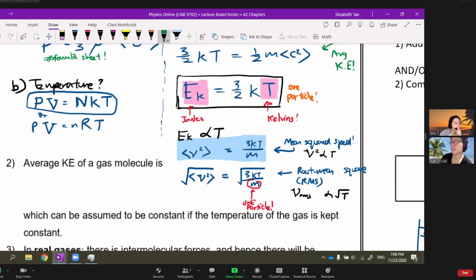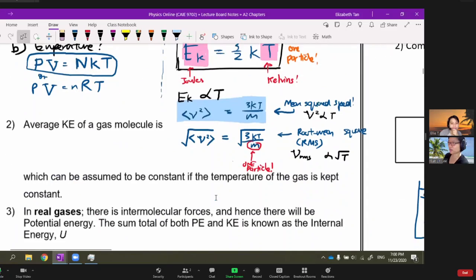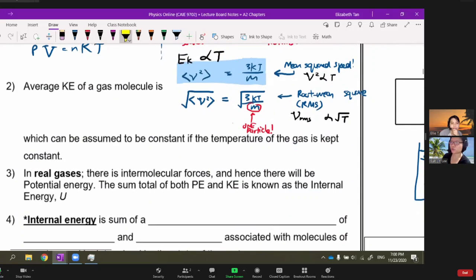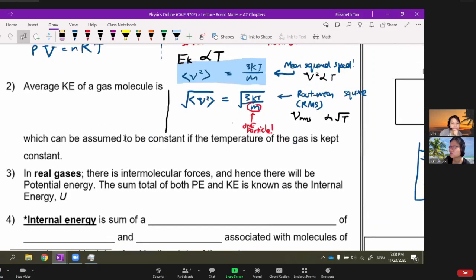You can assume that the average KE of a gas molecule, which is given by this equation EK = 3/2 kT, is constant if the temperature of the gas is kept constant. We have finally related the speed of the particle to pressure and the speed of the particle to temperature. In real gases there's intermolecular forces, so there will be some potential energy.